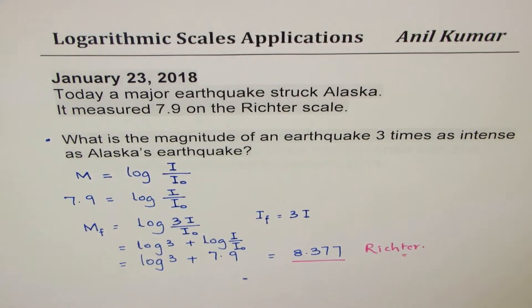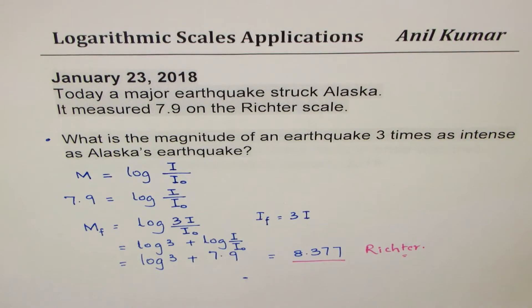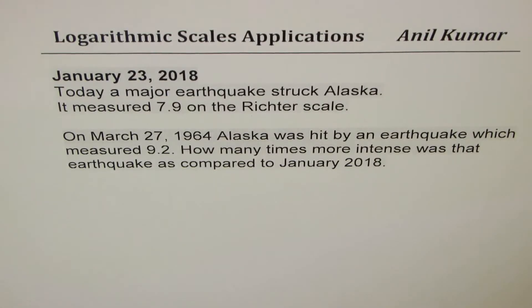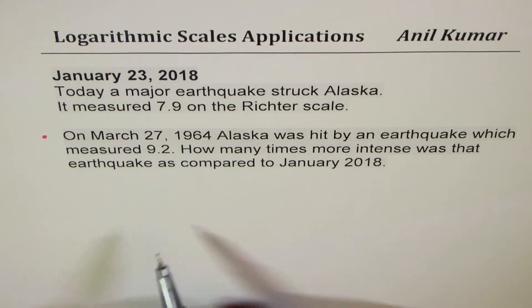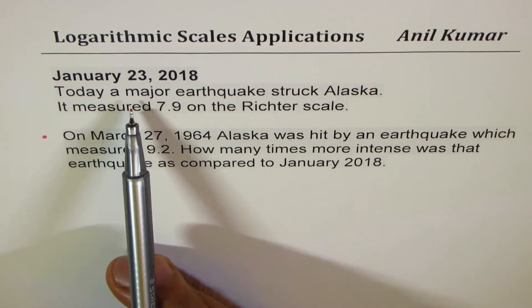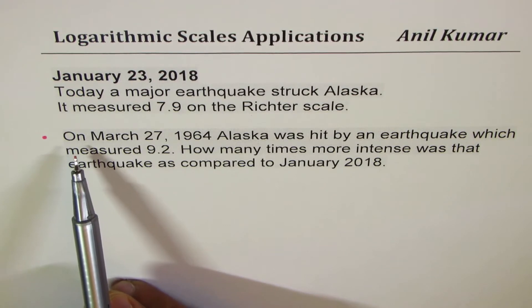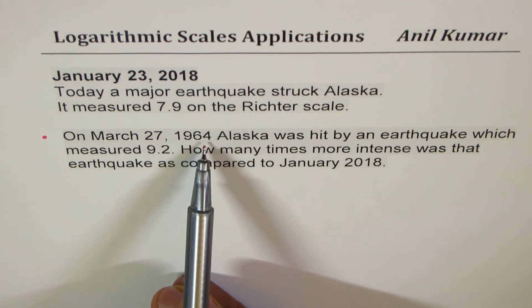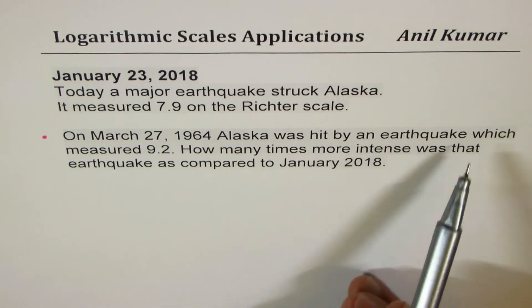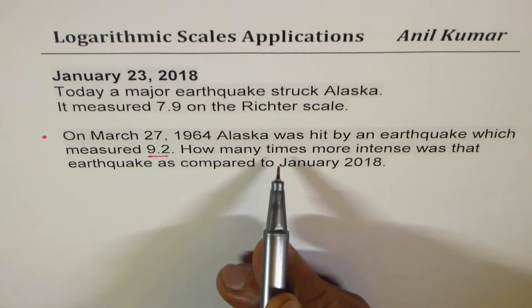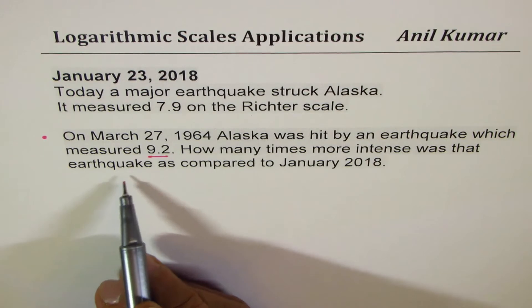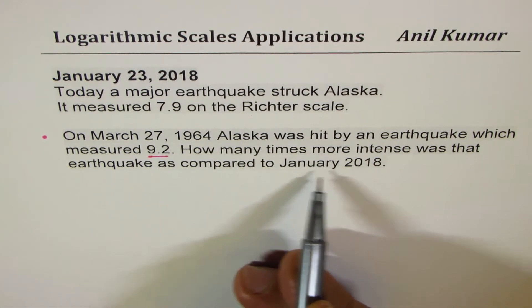Let's see what happened in the past — I have another question based on this. In the past, Alaska had a massive earthquake which measured 9.2. On March 27th, 1964, Alaska was hit by an earthquake which measured 9.2. How many times more intense was that earthquake compared to January 2018's earthquake?